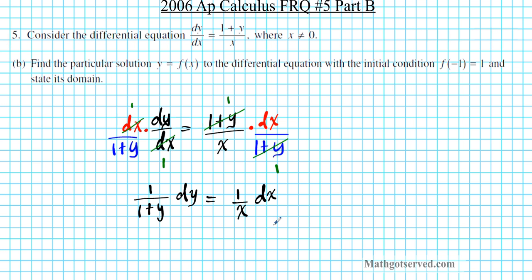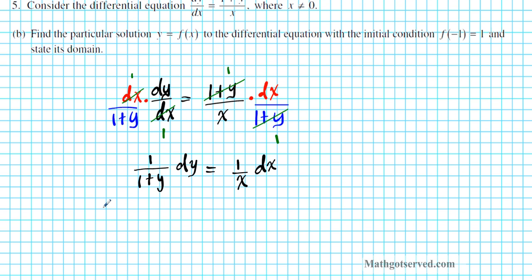Now what have we accomplished so far? We have separated the variables. Now that we have separated the variables we can now find the antiderivative. Remember to find a particular solution we want to isolate y. The moment we have y isolated then we are done. Now the reason why we are finding the antiderivative to integrate both sides, that is the only way we can get rid of this dy and dx components.